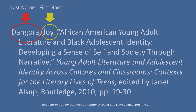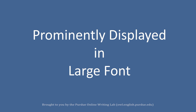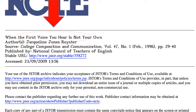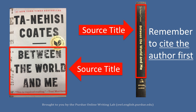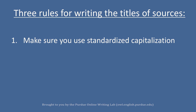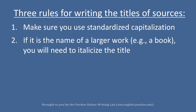Title of Source. The title of the source, like the author, is usually prominently displayed on the work and is in a larger font for easy visibility. On a database article, the title is the first item listed on the information page. On a book, the title is mostly on the front cover or spine. When citing the title, make sure you have already cited the author, and follow three rules: first, use standardized capitalization; second, if it is the name of a larger work such as a book, italicize the title.